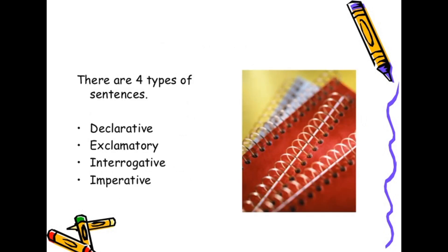Generally, sentences are classified into four types: first, declarative; second, exclamatory; third, interrogative; and fourth, imperative.